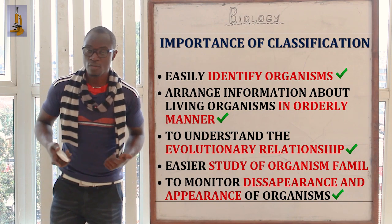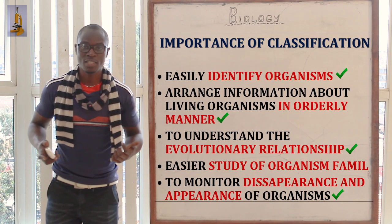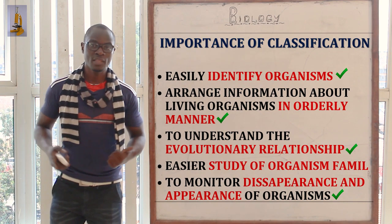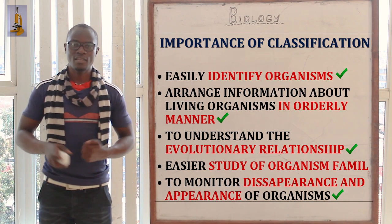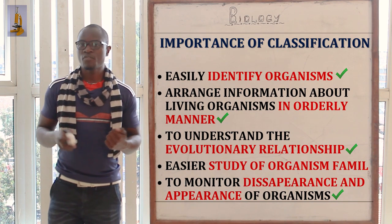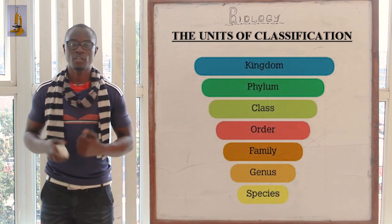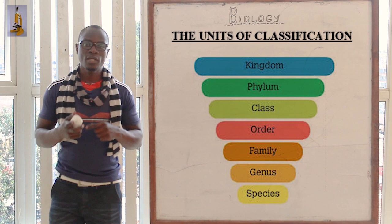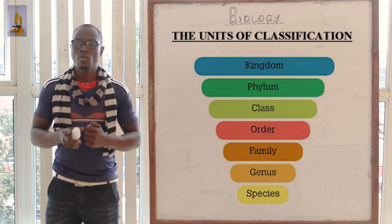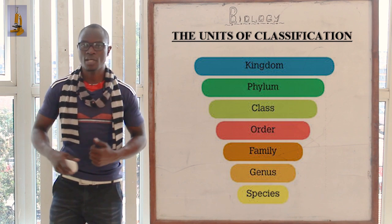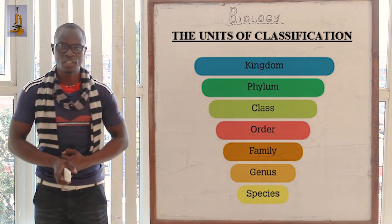For example, we realized that the dinosaurs were extinct because we looked at classification and saw that these organisms should be living in this environment — but where are they? It was eventually discovered that they are extinct. Moving on from the importance of classification, let's proceed to the units of classification. The modern classification came with the units of classification.